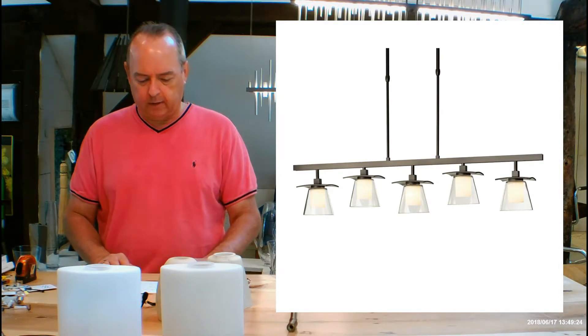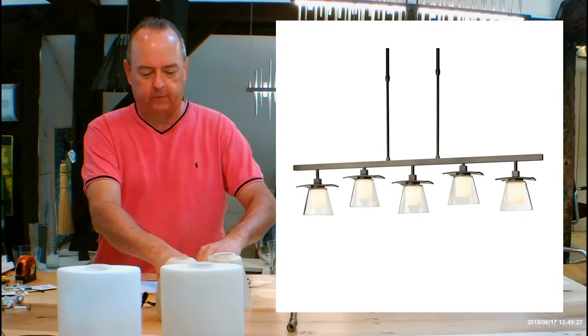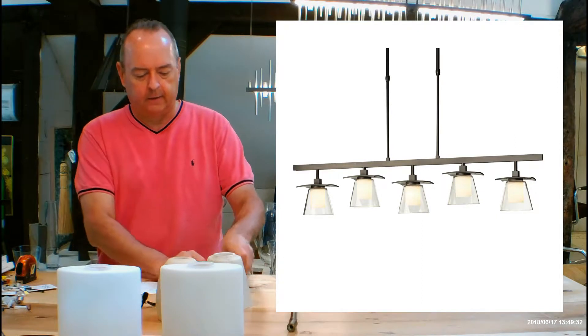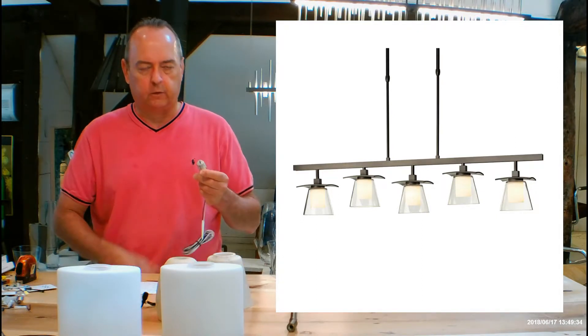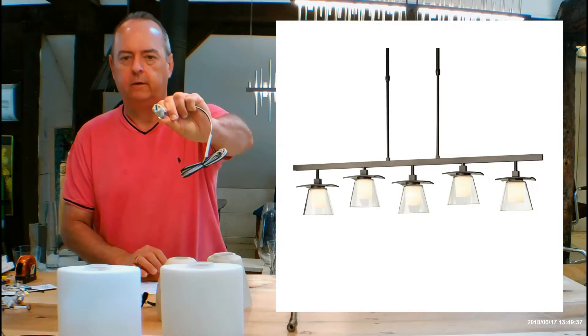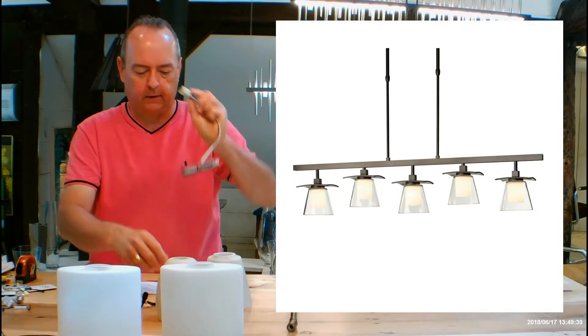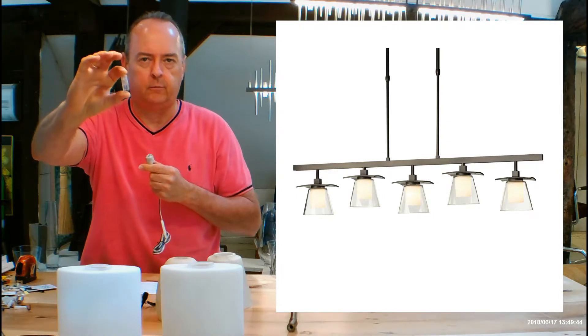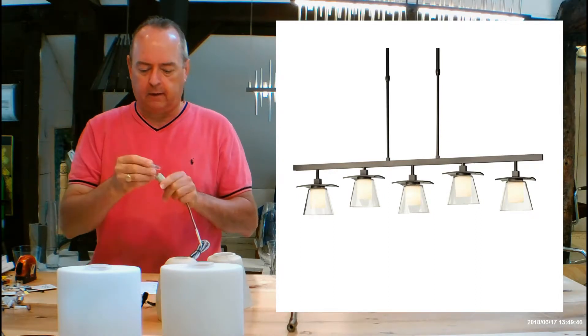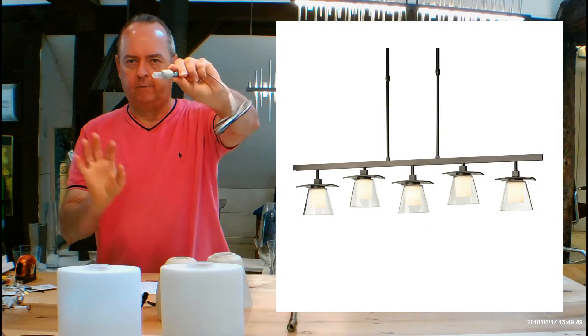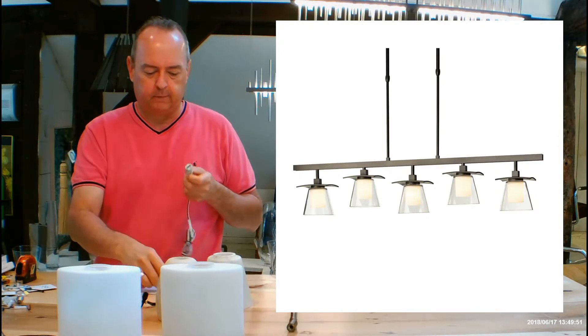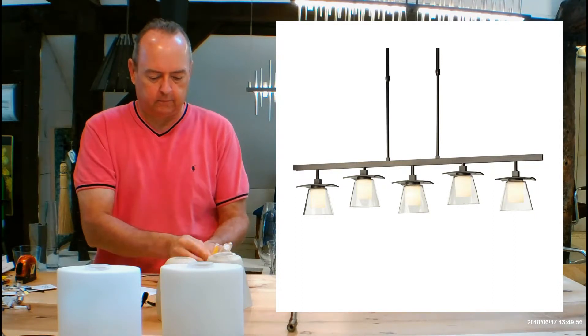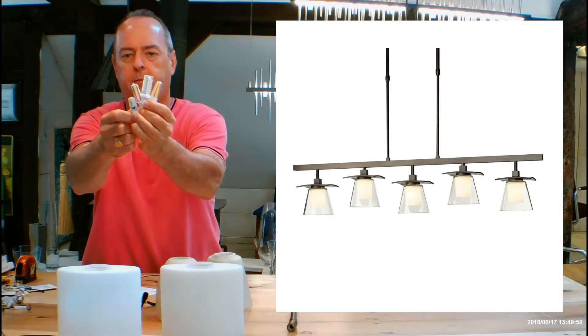Let's hop into lamping. Hubberton Forge says this is a G9 halogen socket. It's really a G9 socket that can accept various bulbs. It's going to ship with 60 watt G9 halogen bulbs which are fine. They fit in beautifully, do the job, they're dimmable, and they throw great light.